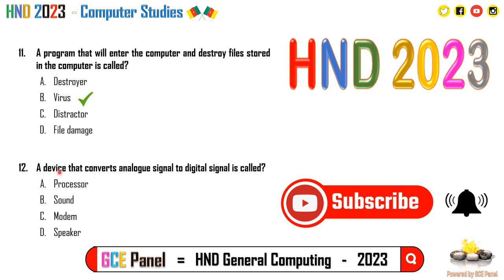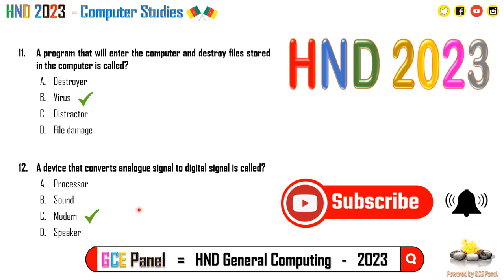Question 12: A device that converts analog signal to digital signal is called a modem. A modem will convert an analog signal to a digital signal. You cannot say speaker here, because what comes out of a speaker cannot really be called a digital signal.